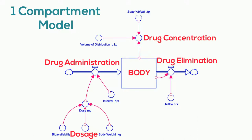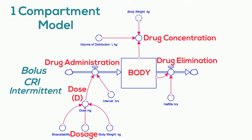Let's focus on drug administration to the one compartment first. Drug administration can be simulated by adding liquid as a bolus, as a constant rate infusion (CRI), or intermittently as repeated doses. The drug dose is the mass of drug — that is, milligrams in this model — administered per dose. The drug dosage is the amount of drug administered per given body weight, for example milligram per kilogram. Obviously then, the drug dose equals the product of dosage and body weight.